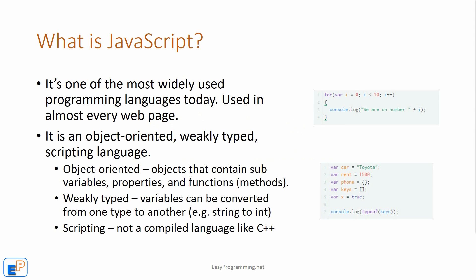So what is JavaScript? It's one of the most widely used programming languages today, used in almost every web page. It is an object-oriented, weakly typed scripting language. Object-oriented means that everything in JavaScript is an object — they contain variables, sub-variables, properties, and functions, also known as methods.